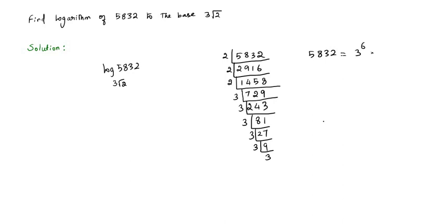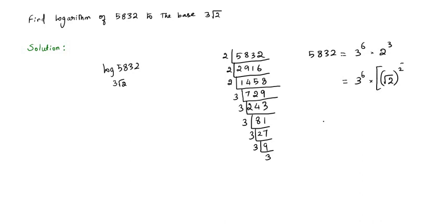5832 = 3⁶ × 2³. But looking at the base of the logarithm, there is a square root of 2, while we just have 2 here. To introduce the square root, I will rewrite 2³ by taking the square root of 2 and squaring it to adjust — because (√2)² = 2. So we keep the same power of 3, and this expression still equals 2³.